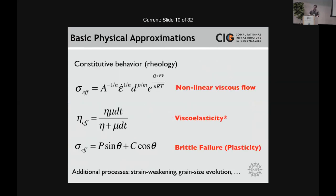The real trick is when you get into the rheology. Most current studies are using nonlinear rheology. In formulating the viscous part, you might see an equation applicable to dislocation or diffusion creep. If N equals 1, you're in the diffusion creep mode; if N is greater than 1, it's nonlinear and you're in dislocation creep mode. This is related to activation volume, energy, grain size terms, and a pre-exponential factor.